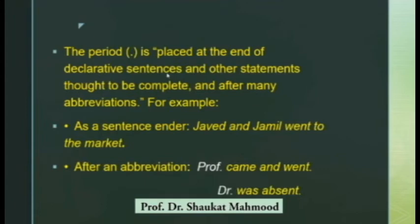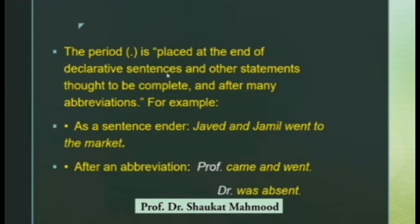The period is placed at the end of declarative sentences and other statements thought to be complete, and after many abbreviations. For example, the sentence 'Javed and Jamil went to the market' ends with a full stop. The full stop is also used in certain cases of contractions and abbreviations. For example, instead of writing 'professor' in full, we can simply write 'PROF.' with a full stop. If we don't put the full stop, it is wrong. Since it is a contracted form of professor, after PROF we have to put a full stop or period. Similarly, if you want to say 'Doctor was absent,' after DR we put a full stop or period.